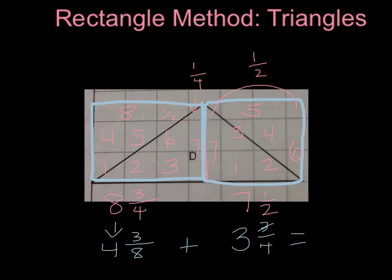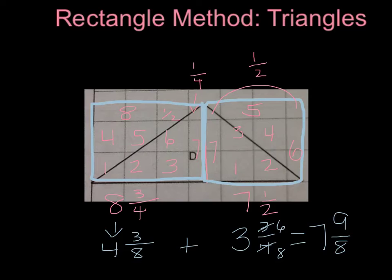When I multiply three by two, I get six, and four times two is eight. Now I can add them together: four plus three is seven, and three plus six is nine, with eight as the denominator. We have an improper fraction, so we simplify by taking eight-eighths out, making the seven into eight, leaving us with eight and one-eighth. That is our final answer for the area of triangle D.